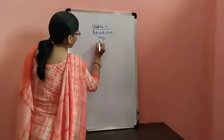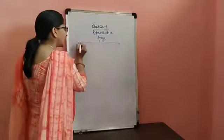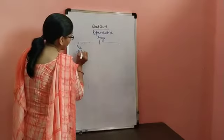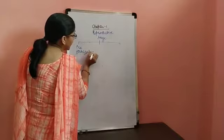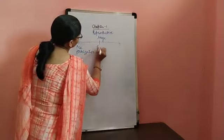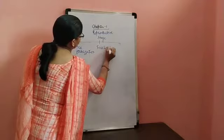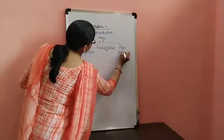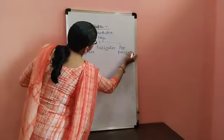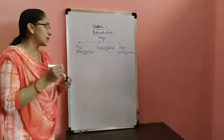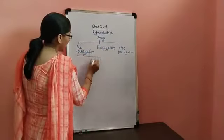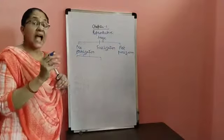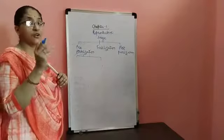When we talk about this reproductive stage, it could comprise of the following events: the pre-fertilization events, the fertilization events, and then we'll be talking about the post-fertilization events which take place in the organisms — specifically the plants and the animals.